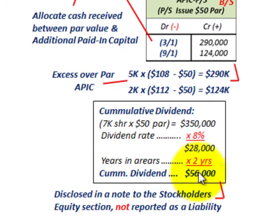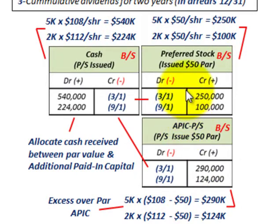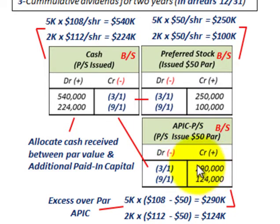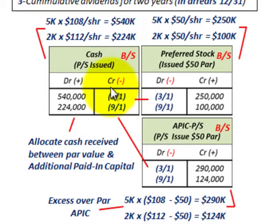To recap: when issuing preferred stock, set up its own separate equity account issued at par value. Any amount above par is allocated to the additional paid-in capital account for the preferred stock, and the cash account reflects the actual cash received at the issue price. Preferred stock issuance is similar to common stock — just set up its own equity account and allocate between par value and additional paid-in capital.